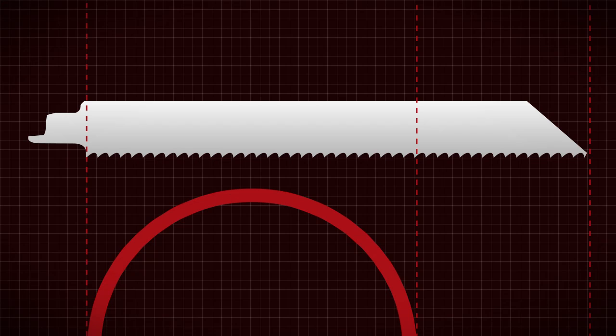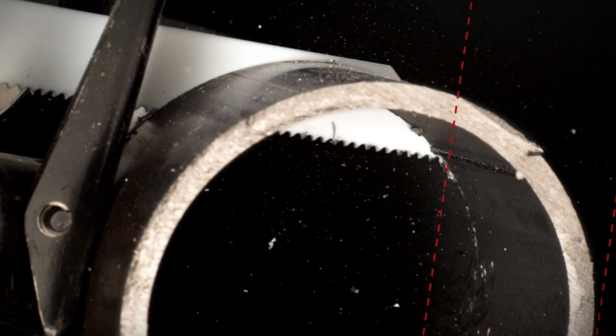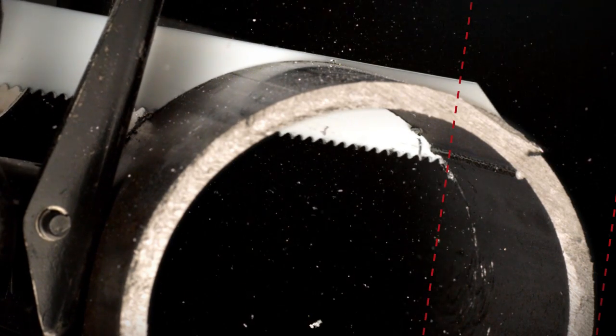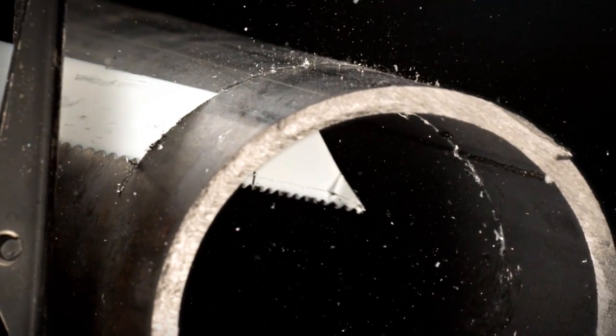When making a cut, choose a blade that's at least three inches longer than the diameter of the material being cut. If the blade is too short, the nose can jam against the material, bending upon impact. Other types of reciprocating blades may even shatter in this situation.